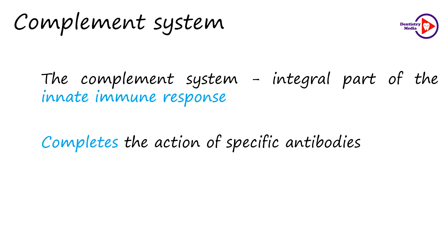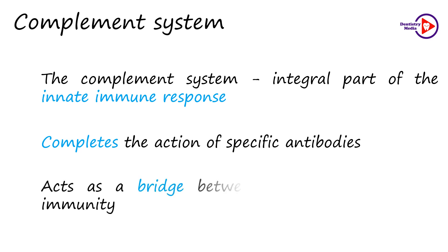The antibodies can target a microorganism for destruction, but they cannot directly kill them. Therefore, these complement proteins augment the opsonization of the bacteria by antibodies, thereby enhancing their destruction. These complement proteins act as a bridge between the innate and the acquired immunity. But remember, they can also act in the absence of antibodies.